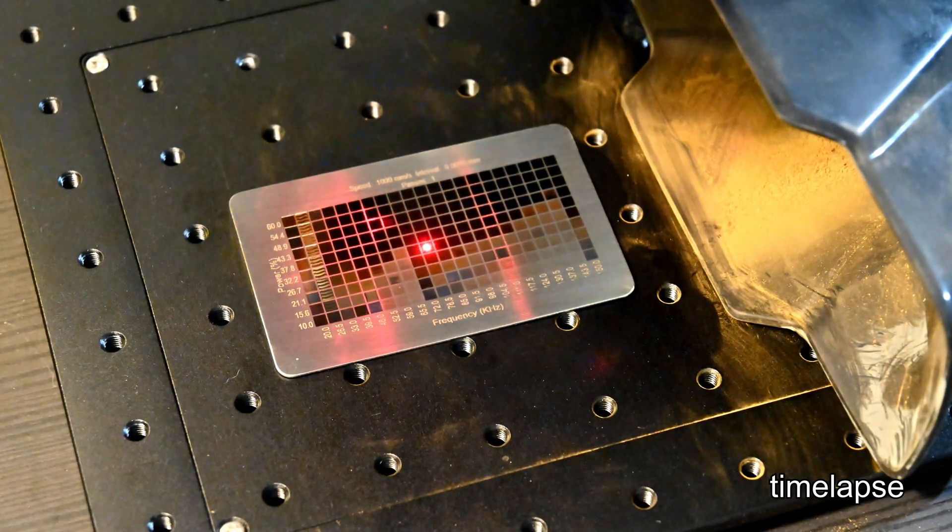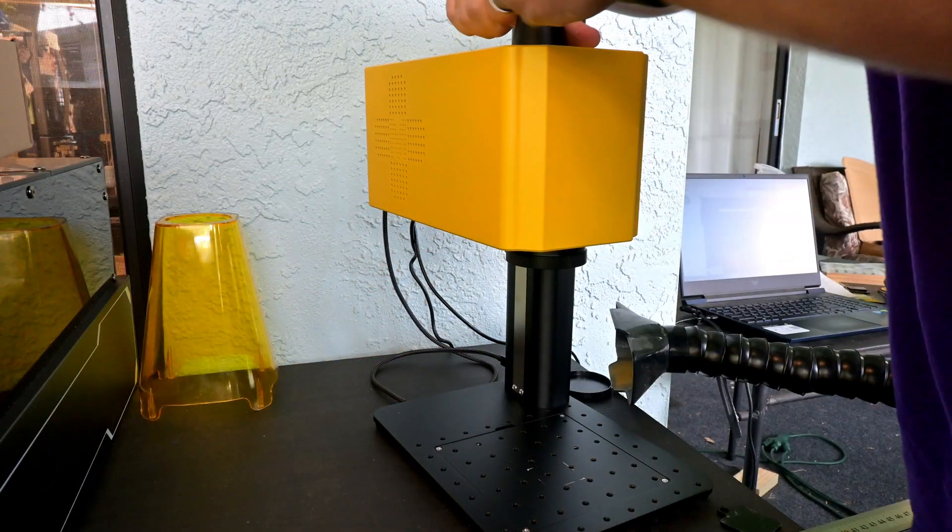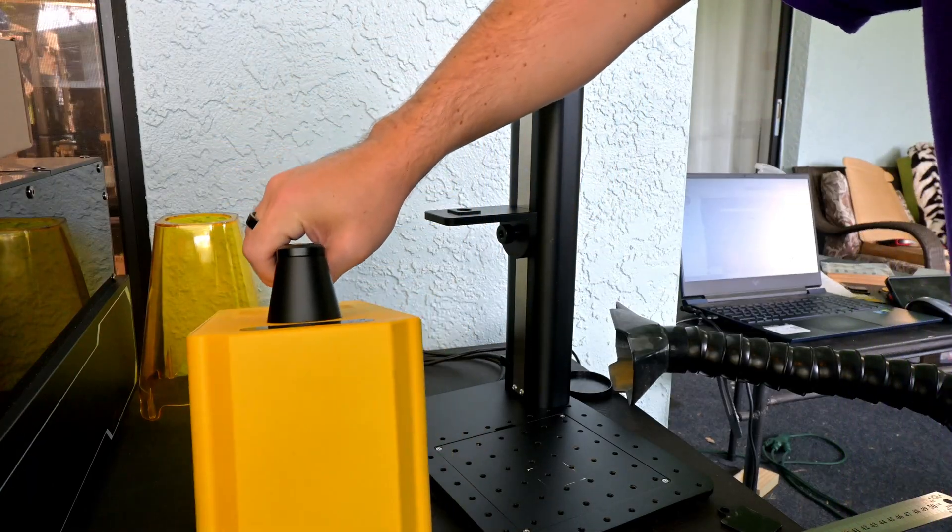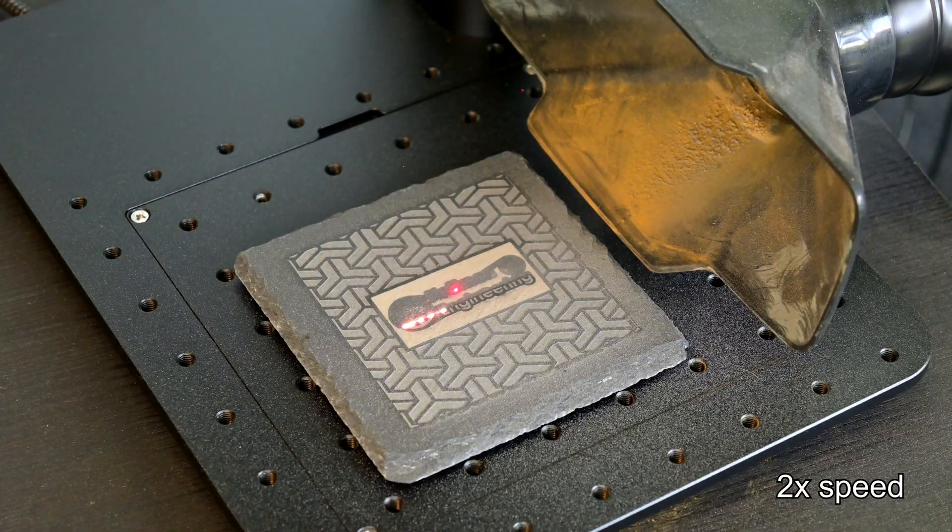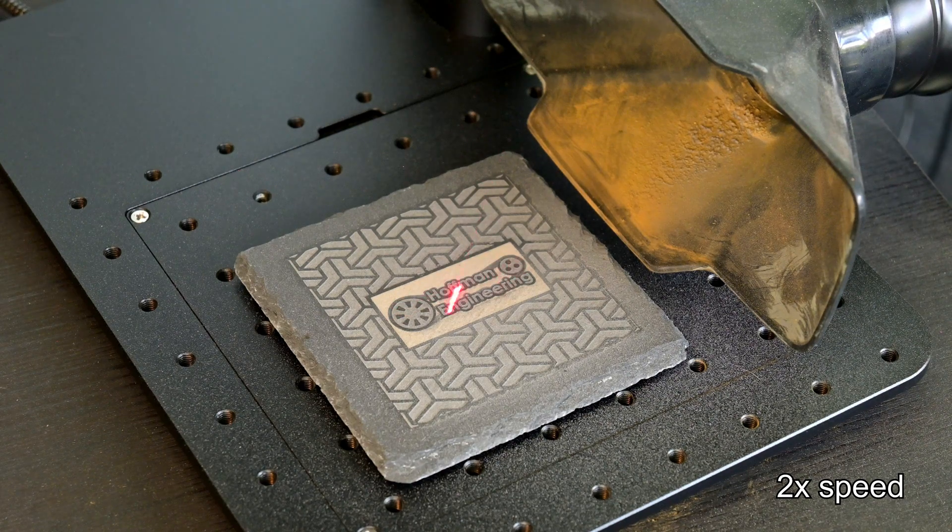The portability of the F1 Pro gives you flexibility on what objects you can engrave. If it can't fit on the lifting stand, then you can always remove the laser and use it handheld. And the included safety shield makes focusing while handheld a breeze. There is no start button or foot pedal though, so you'll have to start the job from your computer, which makes the handheld mode a little harder to use.